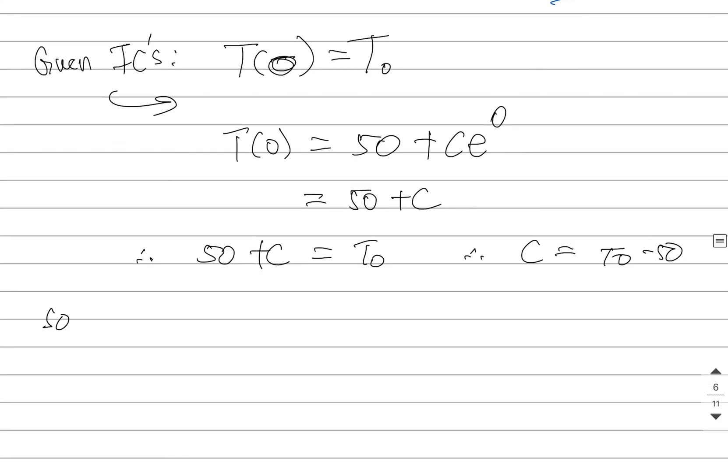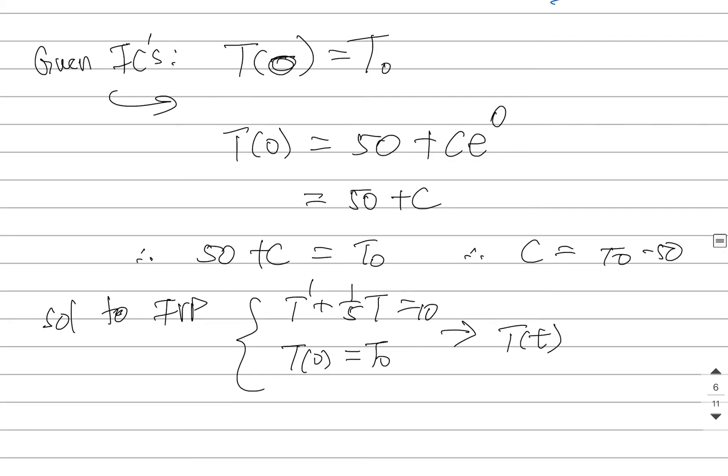So the solution to the initial value problem where I have Newton's law of cooling looks like this. I will get one and only one answer that I will have 50 + (T_0 - 50)e^(-t/5).